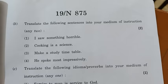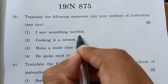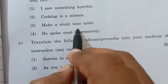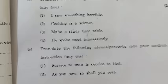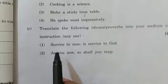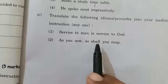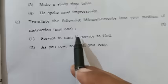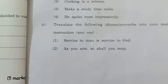Now the sentences to translate into Marathi: 'I saw something horrible' — 'Me khup bhayankar kai tari pahile.' 'Cooking is a science' — 'Pak kala hi shastra ahe.' 'Make a study timetable' — 'Abhyasache velapatrak tayar kara.' 'He spoke most impressively' — 'To khup akarshak bolto.' For idioms: 'Service to man is service to God' — 'Manav seva hi Ishwar seva,' and 'As you sow, so shall you reap' — 'Jase peral tase ukavel.'